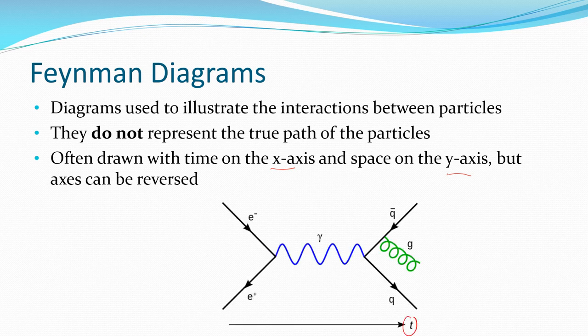There's an example there. You can see time's there and it's almost like this y-axis that's not shown is like a spatial axis. So in this scenario we have an electron interacting with a positron and the mediating particle is a photon there. We'll get into what that means.